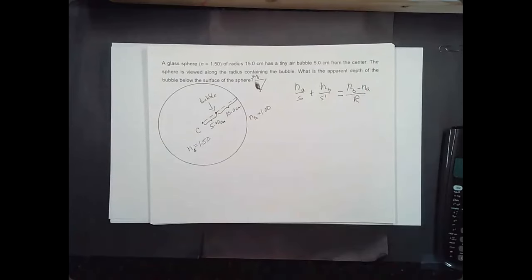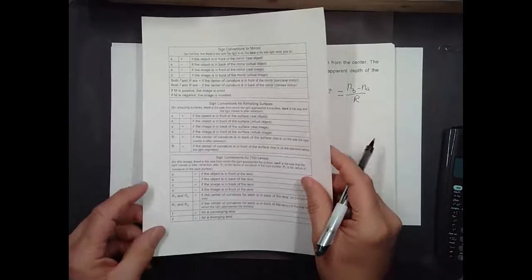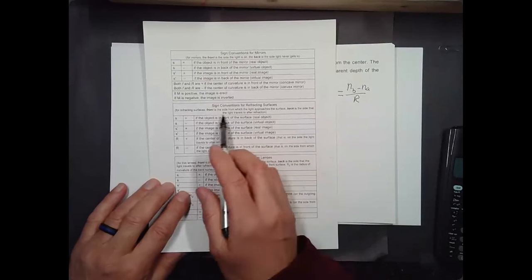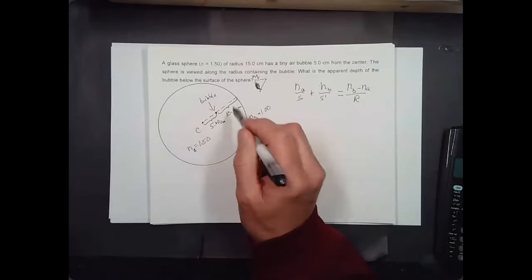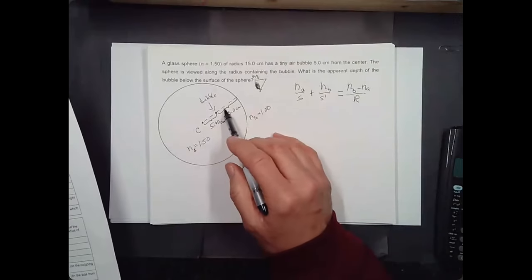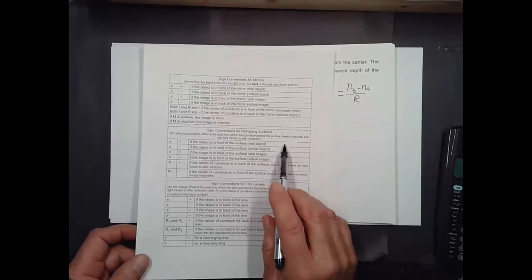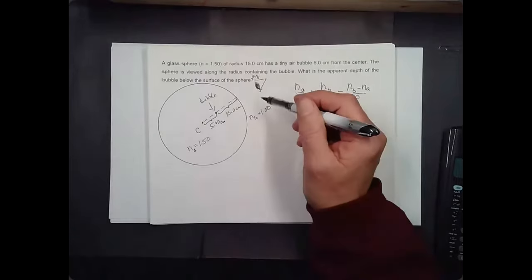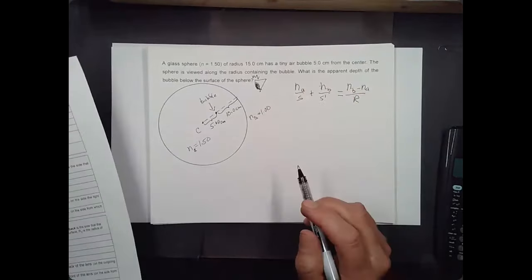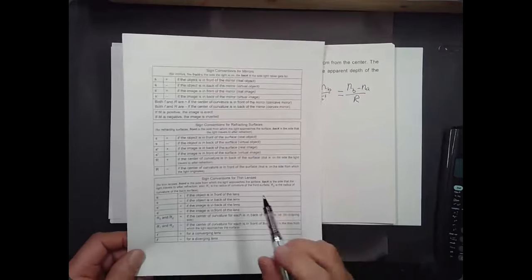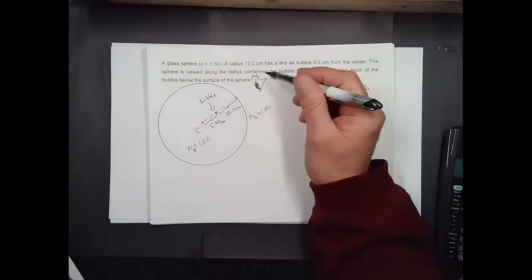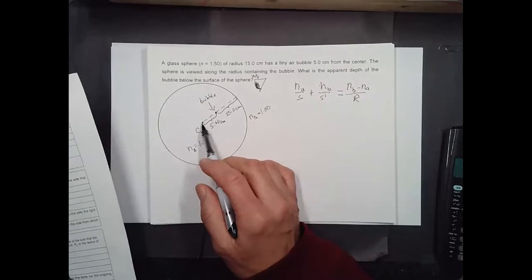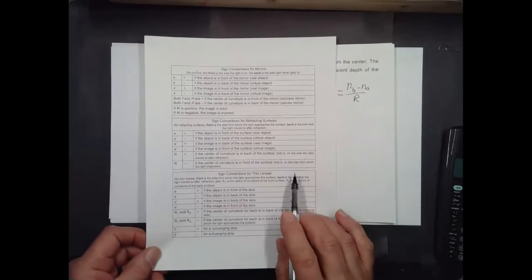Something we need to concern ourselves with is the sign of the radius of curvature. Front is the side from which the light approaches the surface — so this is the front in this case, because the light has to come from the bubble for us to see something. The back is the side that light travels to after refraction. The radius of curvature is positive if the center of curvature is in back of the surface. Here the center of curvature is in front, so it's going to be a negative radius of curvature.